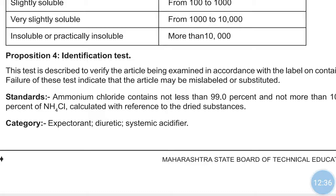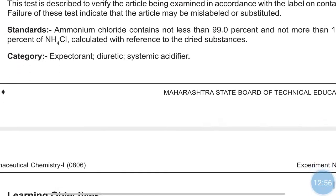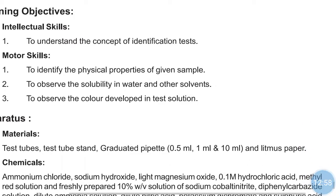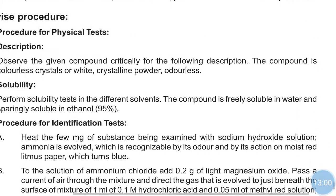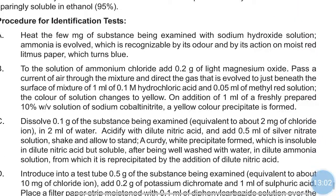The category of ammonium chloride: it is an expectorant — meaning it expels cough/mucus from the respiratory tract. It is also a diuretic, which increases the flow of urine. And it is a systemic acidifier — it increases the level of gastric acid in the stomach.